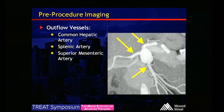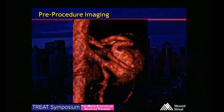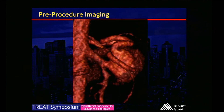Teasing out the outflow here, there are three vessels: the common hepatic, the splenic, and the SMA, as pictured on the MIP image. And this is a 3-D reconstruction which gives you an idea of those three outflow vessels.